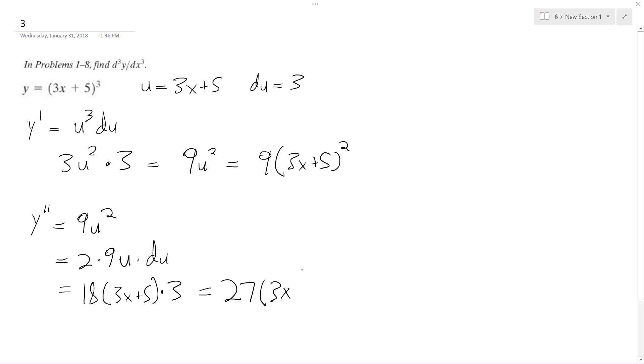I take that back - 3 times 18 isn't 27, it's 54. So 54(3x + 5). If you want to take it a step farther, you can distribute and get 162x + 270.